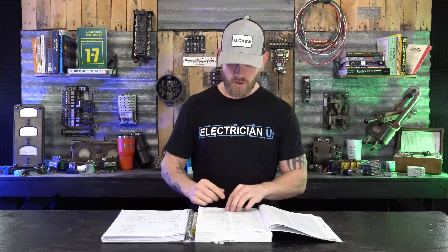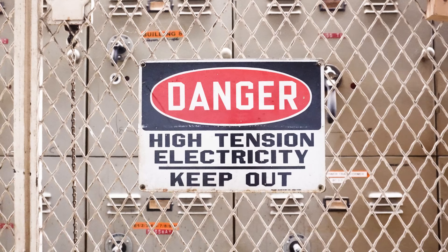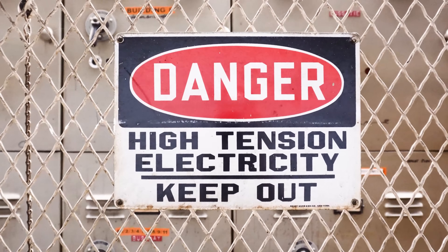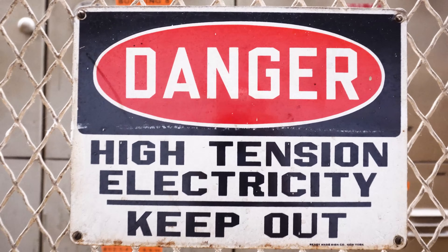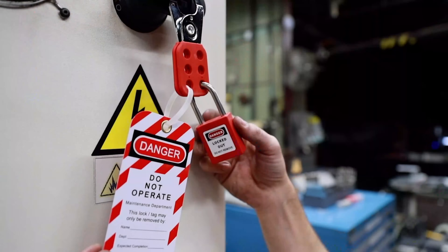Next up is 'enclosed.' There's a difference between concealed and enclosed, and this is where the confusion comes in. Enclosed means surrounded by a case, housing, fence, or walls that prevent a person from accidentally contacting energized parts. It might be an area of electrical equipment someone can't enter, or it might be an enclosure like a box with a cover that you could put a lock on — something that prevents people from touching live parts inside a panel, for example.